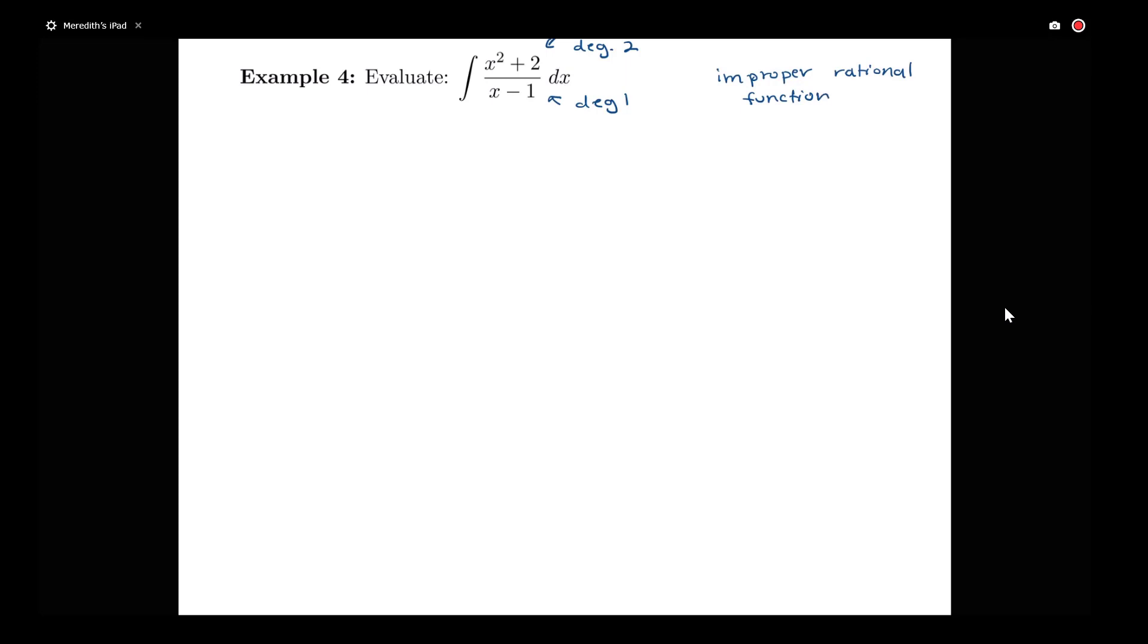Just like we can have fractions that are improper, such as 4 thirds is an improper fraction, I can take something like 4 thirds and write it as 1 and 1 third, or 1 plus 1 third.